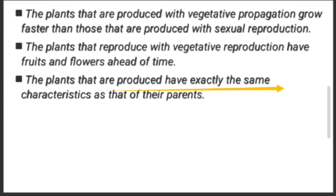The third advantage is: plants reproduced through vegetative propagation have exactly the same characteristics as their parents. Through asexual reproduction, the offspring are exactly like the parent plant — their characteristics transfer to the new generation. This means the characteristics match closely and we can obtain a plant with desired qualities. As we saw in vegetative propagation, grafting and other artificial methods allow parent plant characteristics to transfer easily to new plants. These are the three advantages you need to remember well.